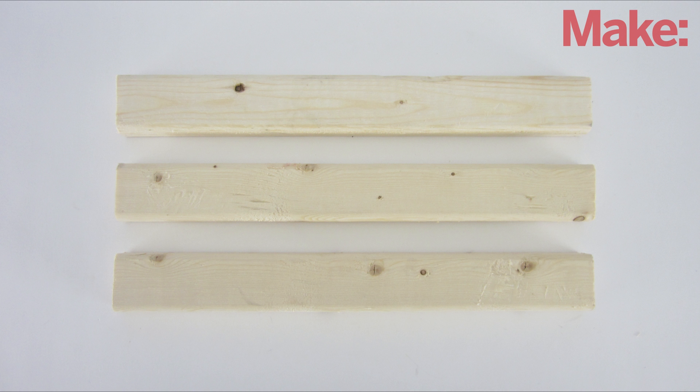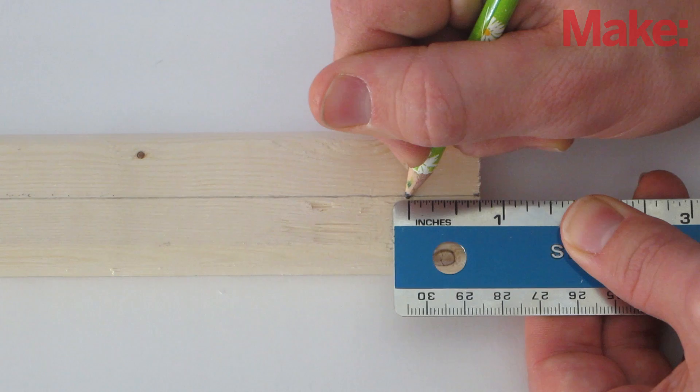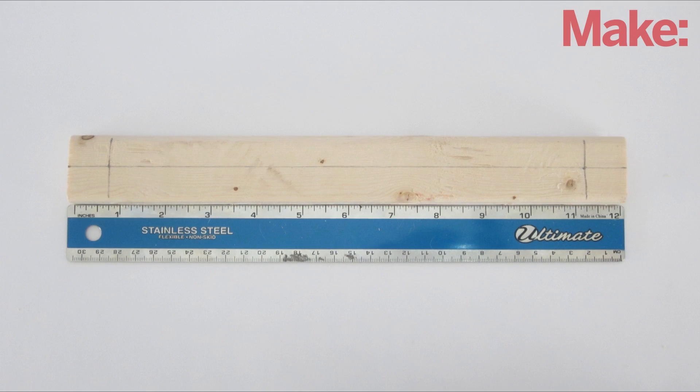Start by cutting the 1x2 lumber into three pieces that are each about a foot long. On one piece, make a mark 3 quarters of an inch from each end. This will be the center board.